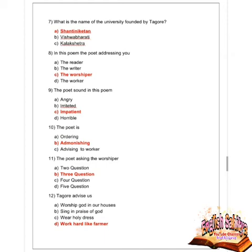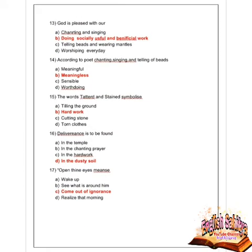Next question: the poet is asking the worshippers how many questions? Options are two, three, four, and five. Option B is correct — three questions. Next question: Tagore advises us to do what? Options are worship God in our houses, sing in praise of God, wear holy dress, and work hard like a farmer. Option D is correct — work hard like a farmer.